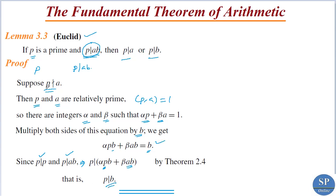That linear combination is nothing but b, so p divides b. Therefore, if p does not divide a, then p divides b. Therefore, if p is a prime and p divides ab, then either p divides a or p divides b.